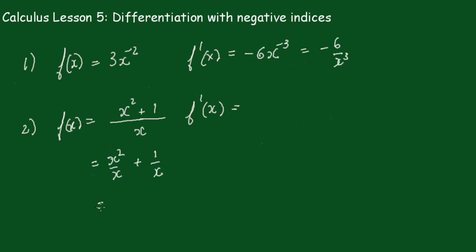That becomes x + x^(-1). Differentiating x gives 1, and differentiating x^(-1) by the rule gives -x^(-2), or 1 - 1/x².